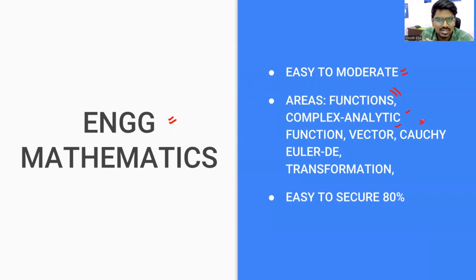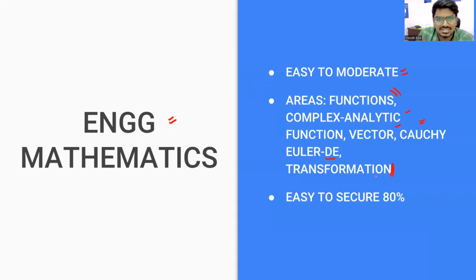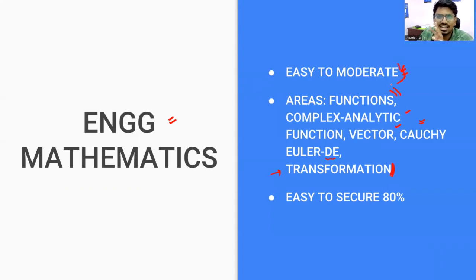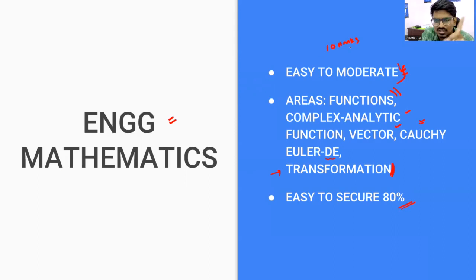There is a question related to the Cauchy-Euler equation — that variable coefficient differential equation is also simple. The transformation question is a little bit new to the ME paper; it has been asked in EE or ECE papers before, but for ME it is fresh. However, it is still a very easy question. That is why I am classifying Engineering Mathematics as easy to moderate, and you can easily secure 80% — if you followed the course structure, test series, and practice sessions properly.